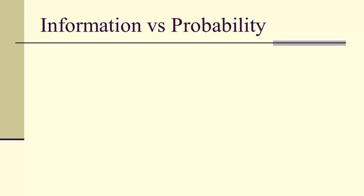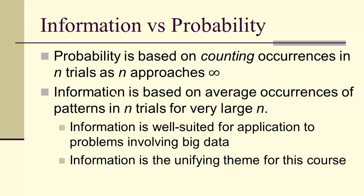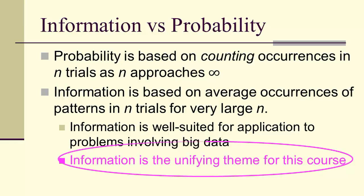Let's look at information versus probability. Probability is based on counting occurrences in n trials as n approaches infinity. Whereas in contrast, information is a way of looking at patterns, so a way of looking at the average occurrences of patterns in n trials for very large n. This is very nice for big data, and in particular, that means we're going to use information as the unifying theme for this course.